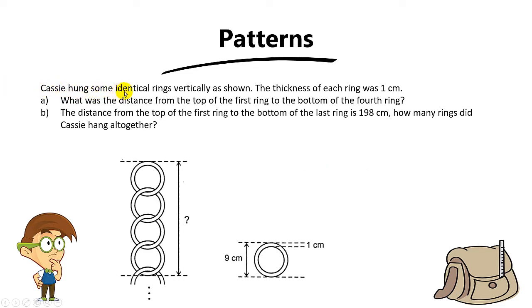KC hung some identical rings vertically as shown. So here are some identical rings and the thickness of each ring was 1cm. For part A, they want the total distance from the top of the first ring to the bottom of the fourth ring. So as you can see, the rings overlap over here. Can you tell me what is the overlap part?